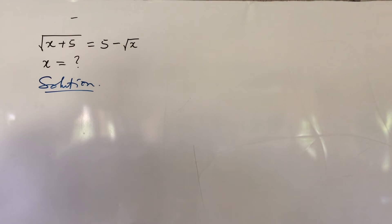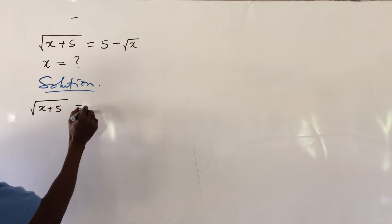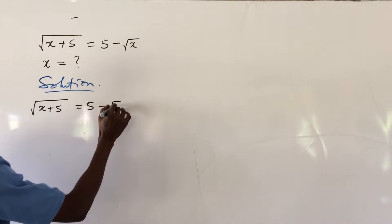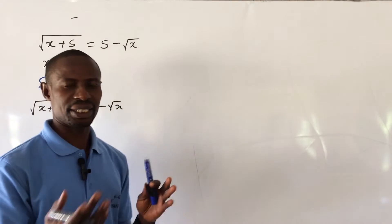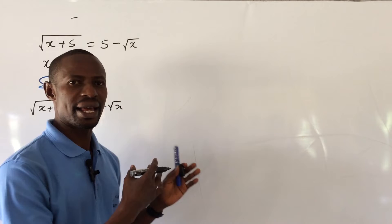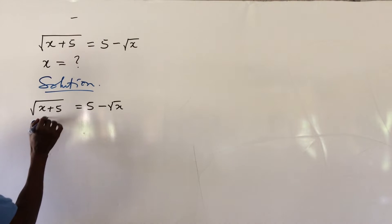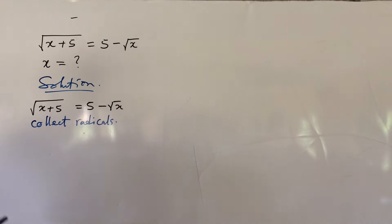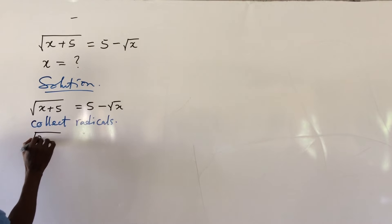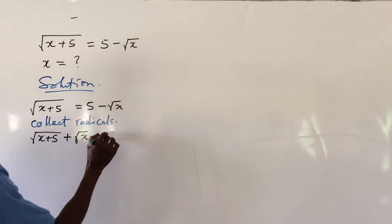We bring down our equation which says root of (x plus 5) equal to 5 minus root x. Now this is a radical, so the number one thing we do here is to collect the radicals to one side. So we collect radicals to the left hand side. If we collect our radicals we're going to have root of (x plus 5) plus root x equal to 5.